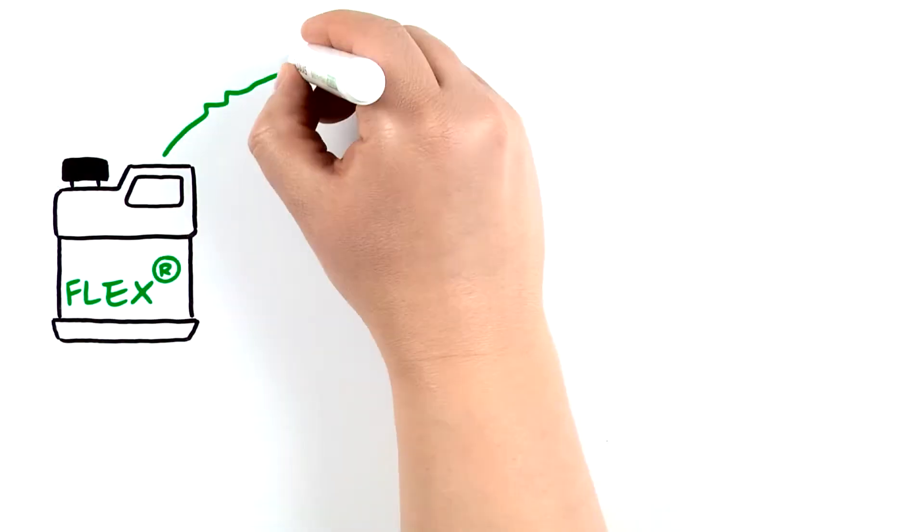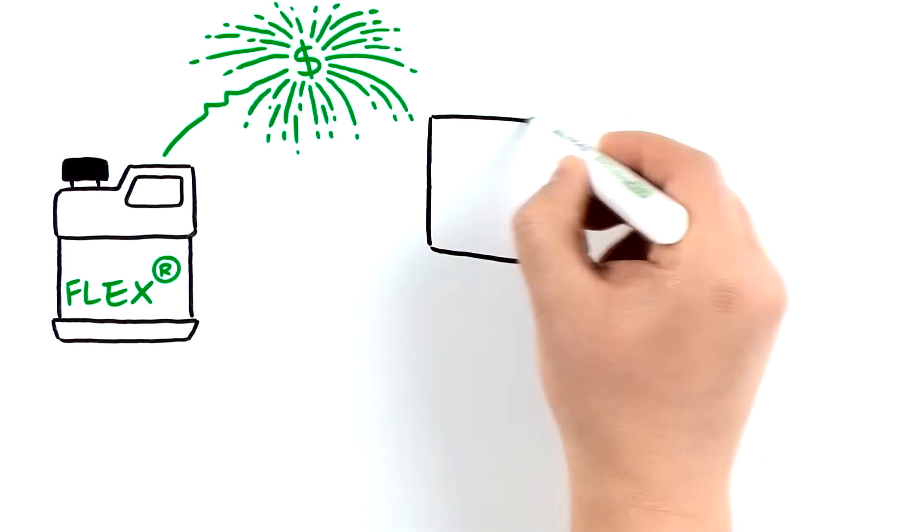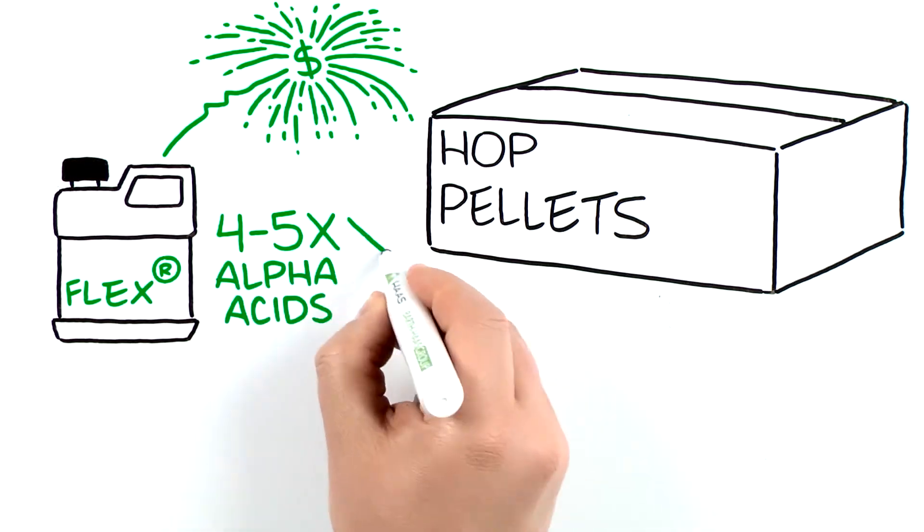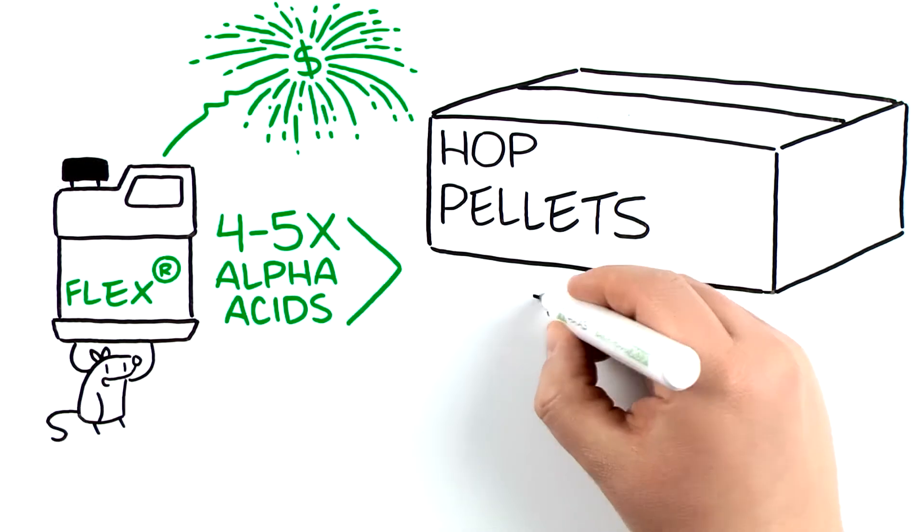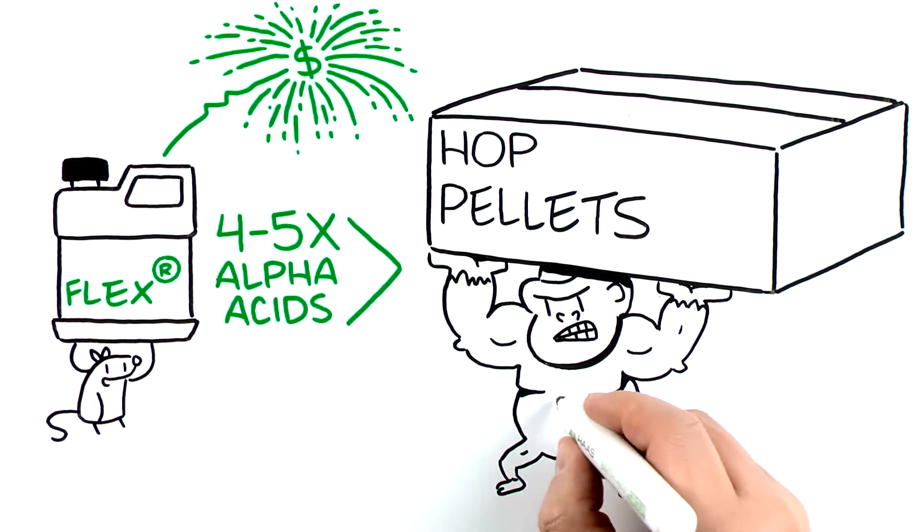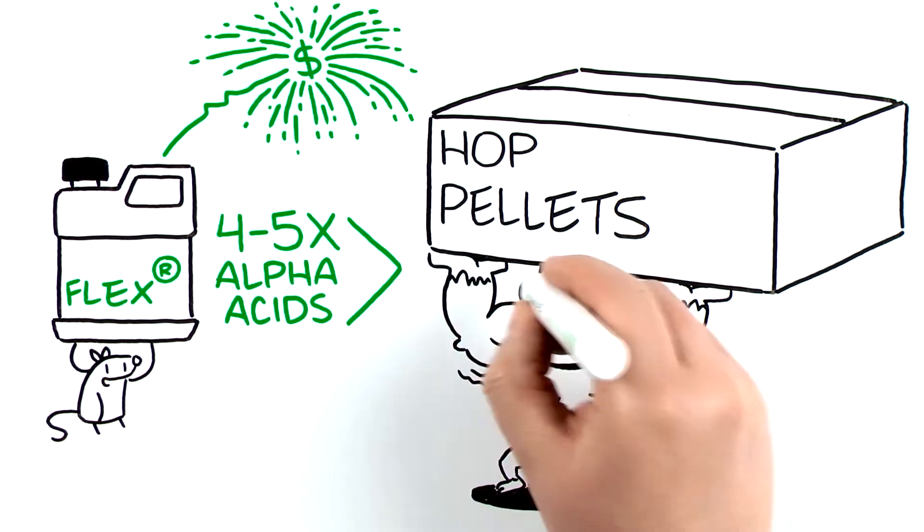FLEX provides more bang for your buck compared to conventional hop pellets. FLEX has four to five times more alpha acids, and alpha acid into iso-alpha acid conversions are 10 to 20 percent more efficient when you substitute FLEX for pellets.